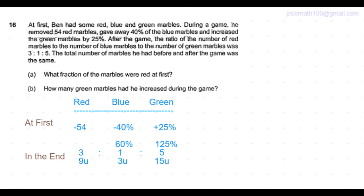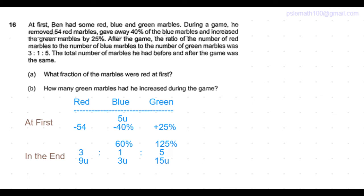So the blue marbles in the end is 3 units. At first, he would have had 5 units. The green marbles, in the end, he has 15 units, which corresponds to 125%. So 100% would correspond to 12 units.